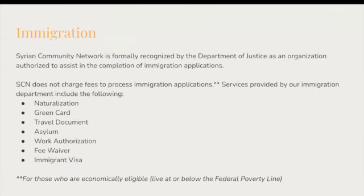Let's take a look at immigration. SCN offers free immigration legal services to low-income refugees and immigrants, as well as our new asylum clinic. Refugees have the right to apply for legal permanent residency — or a green card — a year after their arrival in the U.S. and must do so within two years. Refugees are eligible to apply for U.S. citizenship after five years of living in the U.S. if they've adjusted their status to legal permanent resident and have met other requirements. We can assist clients in the application processes for naturalization, green card, travel documents, asylum, work authorization, fee waivers, or immigration visas.